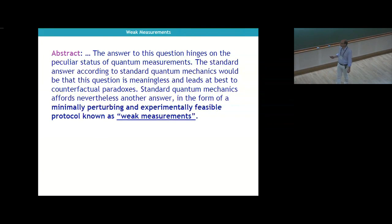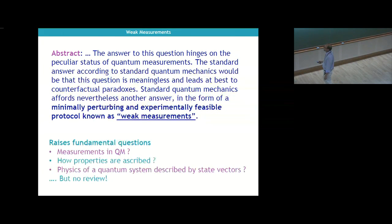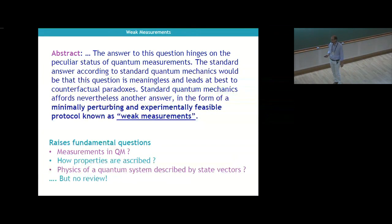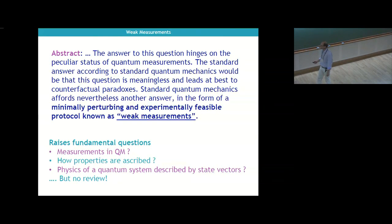The reason why in the last ten years or so weak measurements have become more popular is that this protocol is experimentally feasible, and so people have made a lot of experiments. This is part of the success of why weak measurements are attracting a lot of attention, even though they're very controversial. All this raises fundamental questions. When we try to understand the meaning of weak measurements, there's a question of how properties are ascribed in quantum physics. What is a property? When can you say that a system has this or that property?